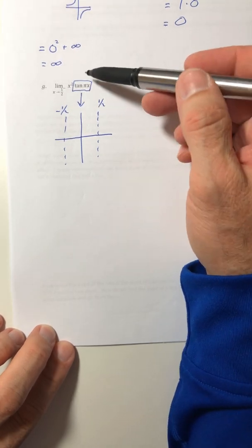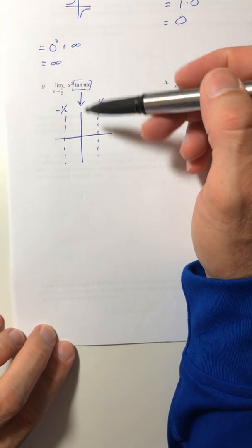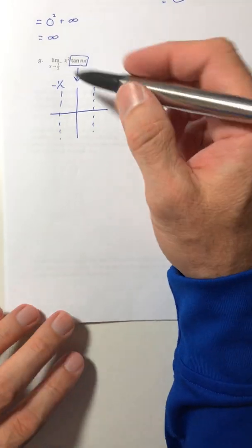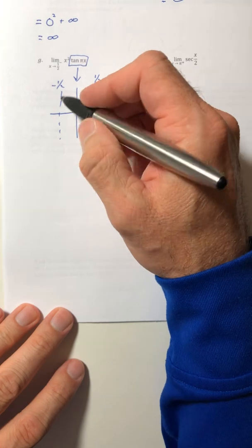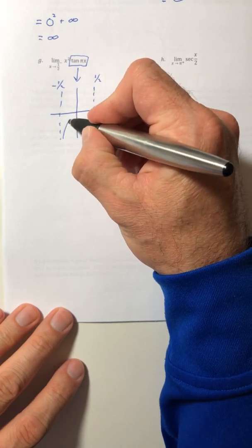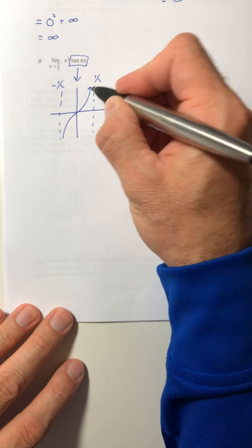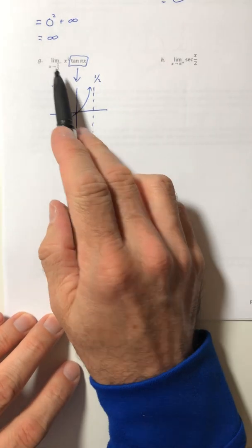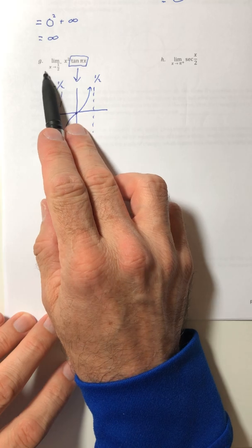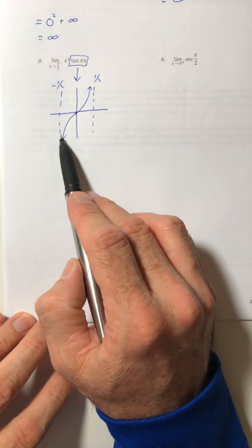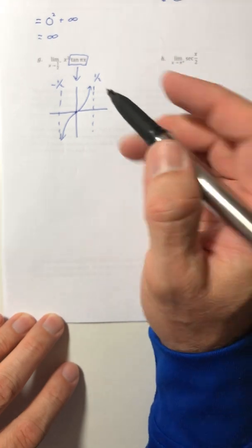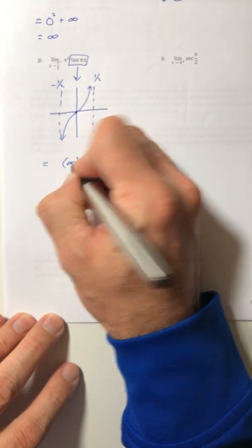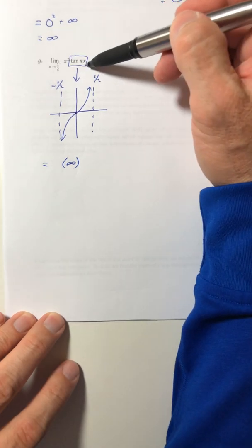And yes, you're expected to know how to graph that. So if you need a review, your trig stuff, you might want to review it. And then the tangent curve goes right through the origin and curves kind of like that. So as you come in from, or as x approaches one half from the left, that is going off to infinity.